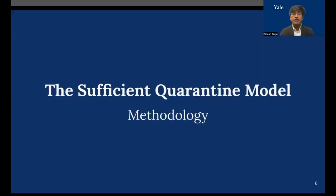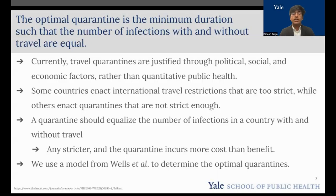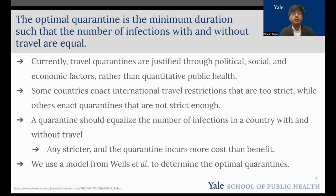To do this, we used a sufficient quarantine model. The sufficient quarantine model, developed by my lab in a paper published by Wells et al. in Lancet, looks at the optimal quarantine duration, which is the minimum duration such that the number of infections with and without travel are equalized. This way, we can ensure that the quarantine isn't too strict, meaning that there's a waste of resources, or too loose, meaning that there's an increase of infection.